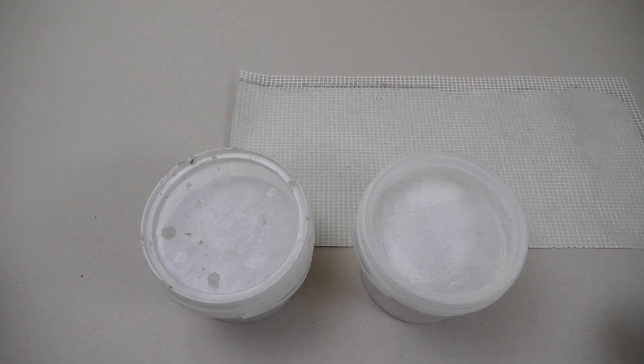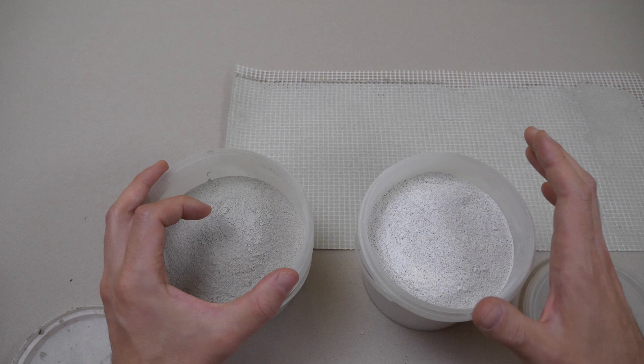Cementitious adhesive usually comes in two colors: white and grey. If your mosaic will be placed outside, then don't forget to check that the adhesive is for exterior use.